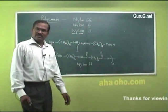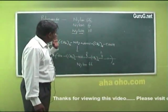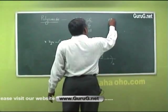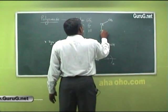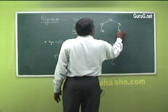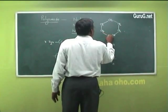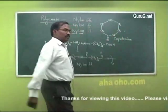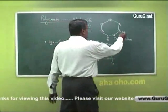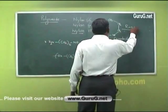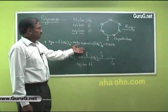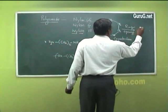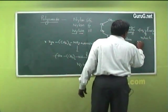Now let us see the preparation of Nylon-6. Here we have only one number, meaning we are not taking a separate dicarboxylic acid and diamine — we take only one compound called caprolactam. It is a ring-opening polymerization. Caprolactam has 6 carbon atoms, and on heating it undergoes ring-opening polymerization. This is a condensation polymerization as well, and we have seen addition polymerization reactions, whereas this is ring-opening polymerization.